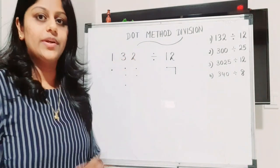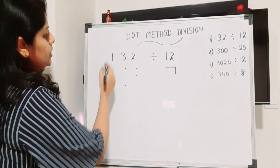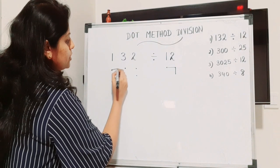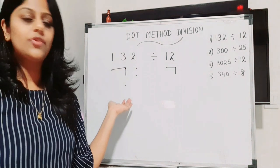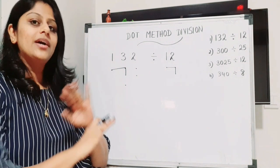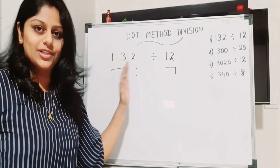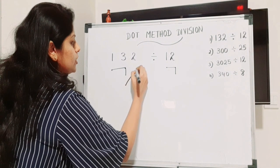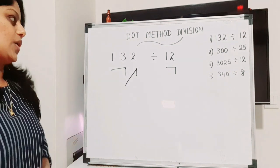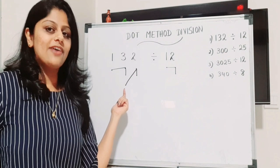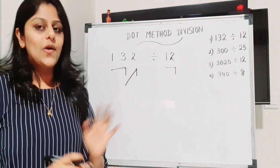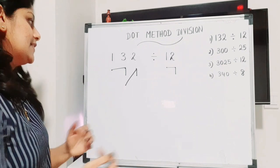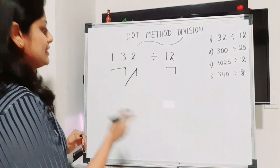In the first column we have one dot and in the second column we have two dots, so they form one group. There are no remaining dots, so we move on. Again, one dot from the next position and two dots from the following column form another group. All dots in the second and third columns are completed.